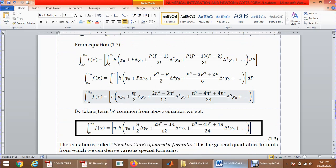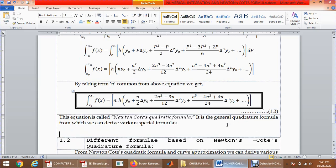This will be y0, this will be n/2 ∆y0, (2n² - 3n)/12 ∆²y0, (n³ - 4n² + 4n)/24 ∆³y0. The equation written here is called Newton's Cotes quadrature formula. It is the general quadrature formula from which we can derive various special formulas required for calculation of numerical integration.